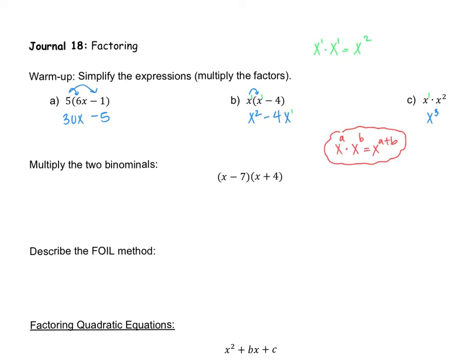You only add exponents when you're multiplying x's. If terms are joined by minus signs, you would not add the exponents. Now this next one is what we call a binomial — an expression that has two terms. This factor has two terms: an x and a 7; the other has an x and a 4. So both of these are binomials. Similarly, 6x minus 1 is a binomial. A binomial means two terms.